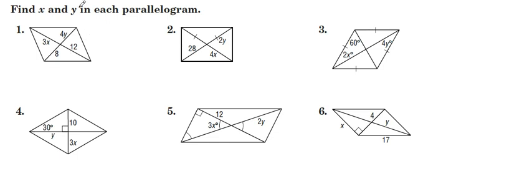On number one, we're seeing here the two diagonals. Another property of parallelograms is the diagonals bisect each other. So if diagonals bisect each other, this piece is equal to this piece, and this piece is equal to this piece. I'm going to set 8 equal to 4y. Solve for y by dividing by 4, y is 2. I'm going to set 3x equal to 12. Divide by 3, x is 4.